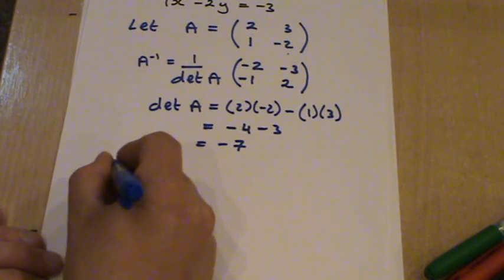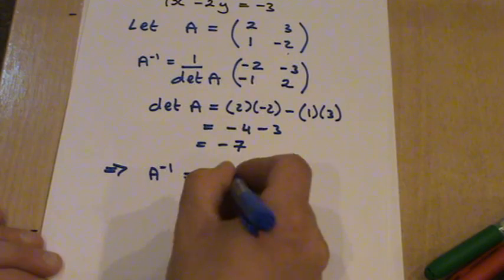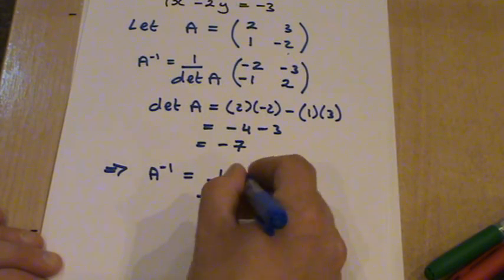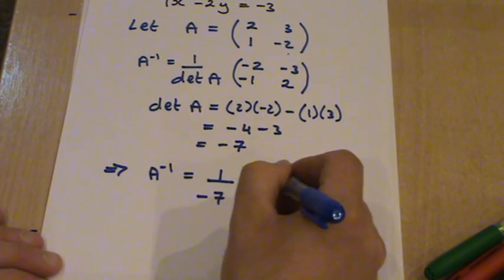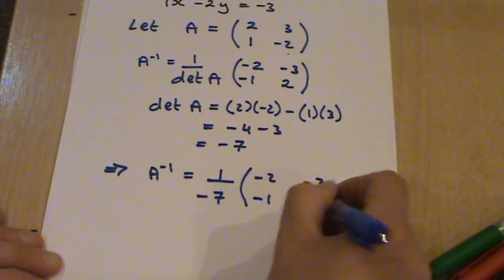So this implies then that A inverse is 1 over minus 7 on minus 2, minus 3, minus 1, 2.